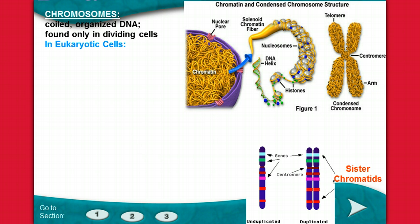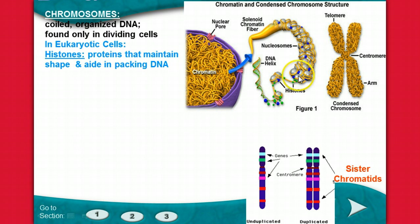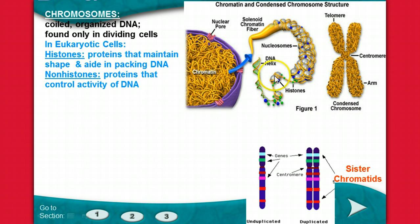In eukaryotic cells, the reason chromosomes can condense and form that X-like looking structure is because there are histones, which are proteins that maintain shape and aid in packing DNA. The DNA coils around different proteins — the blue and bright green are called histones. They enable the DNA strand to wind up and wrap around non-histones, which are proteins that control the activity of the DNA. The non-histones are the white pieces of protein that have the DNA and histones wound all the way around them. This is called supercoiling.